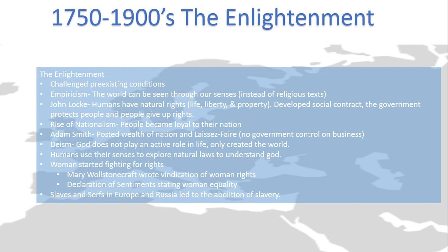John Locke was a practitioner of empiricism. He believed that humans have natural rights — those rights include life, liberty, and property. As you can see, that's really similar to our Declaration of Independence, which states that each human has the right to life, liberty, and the pursuit of happiness. He developed a social contract, which basically means that the government protects the people and in return the people give up some rights. The government is made for the people, not the other way around.